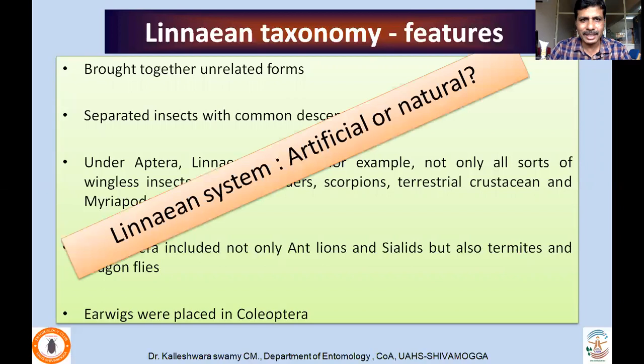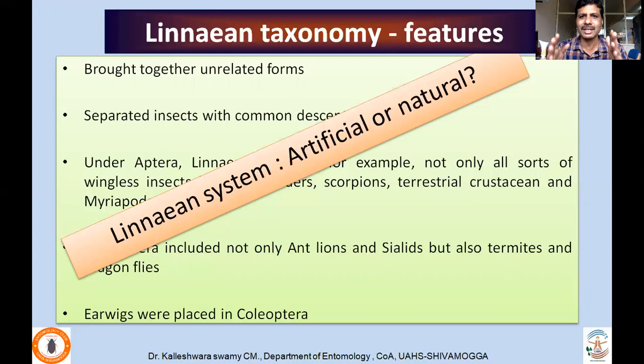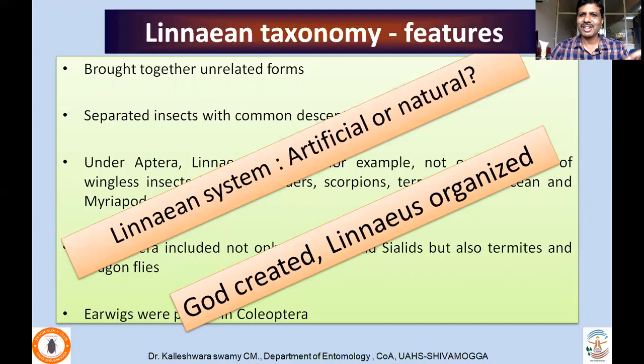Linnaean taxonomy is largely considered as artificial, but the work of Carolus Linnaeus gave a direction to future taxonomists that classification can be made so that it will be really helpful for further communication and for any other branches. Classification is a very important science that we should attempt. It was also said that Carolus Linnaeus himself used to tell that God created the organisms and Linnaeus organized. Now we know it is actually evolution which creates organisms, and the result of speciation finds the wide varieties or diversities of insects at present.